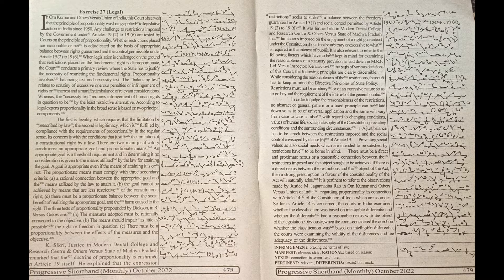The proportionate means must comply with three secondary criteria. A: a rational connection between the appropriate goal and the means utilized by the law to attain it.